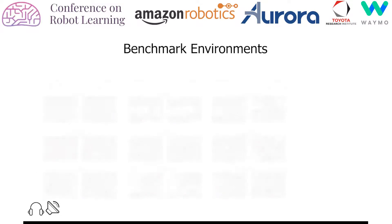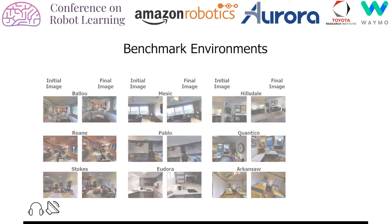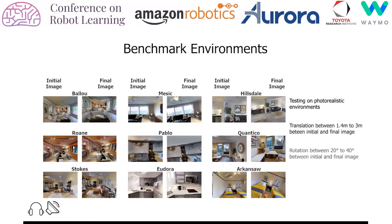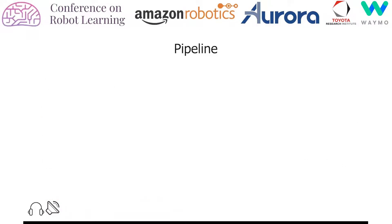We evaluated our deep model predictive control pipeline on a visual servoing benchmark consisting of 9 scenes selected from Gibson environments loaded in the Facebook Habitat simulator. We test our controller on these photorealistic benchmark environments and show our results for 6 degree of freedom visual servoing and navigation in these scenes.